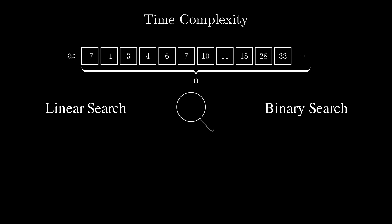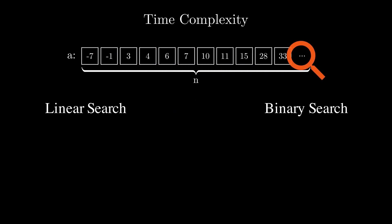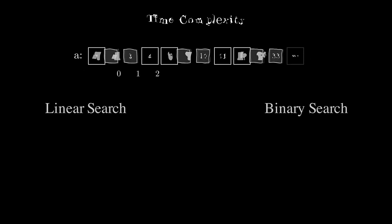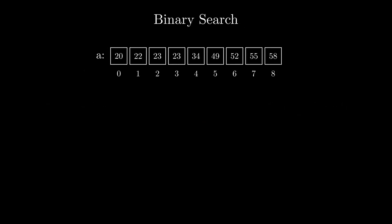As we iterate over all the numbers when performing the linear search, we would perform all of n operations in total. On the other hand, as we half the number of elements we need to consider on each iteration, the time complexity for the binary search becomes O(log n). Let's see how we can implement the binary search algorithm and make the implementation as elegant as possible.